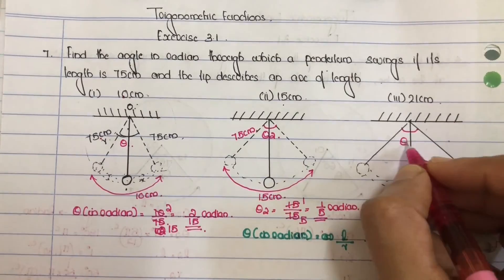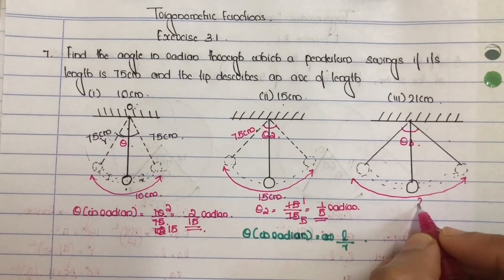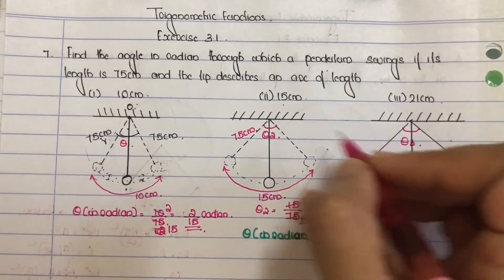Next angle theta 3, arc length 21 centimeter, radius 75.